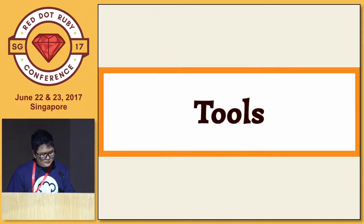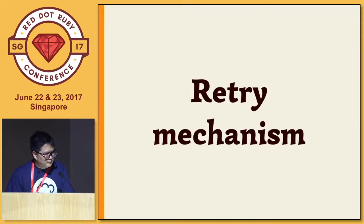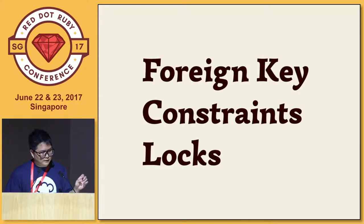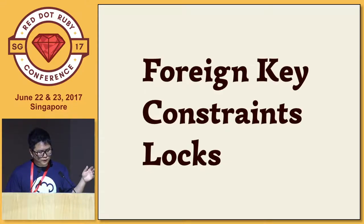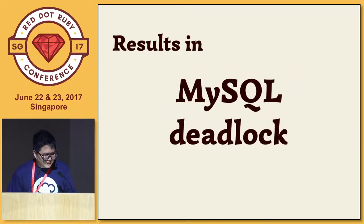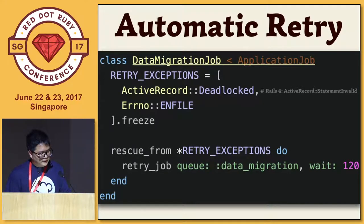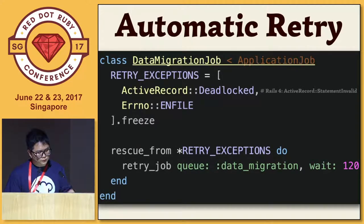Run your background jobs against all your data to find all errors before the real migration happens. You'll also need a retry mechanism. In MySQL, if you have foreign key constraints, when you do inserts or updates with many workers accessing the same record, the locks will result in MySQL deadlocks. In Rails, you can rescue from this exception and automatically retry after around two minutes.